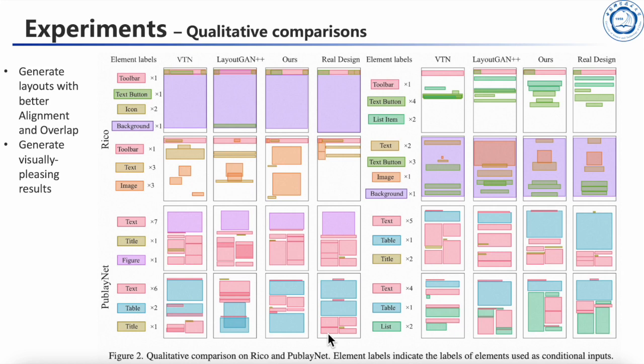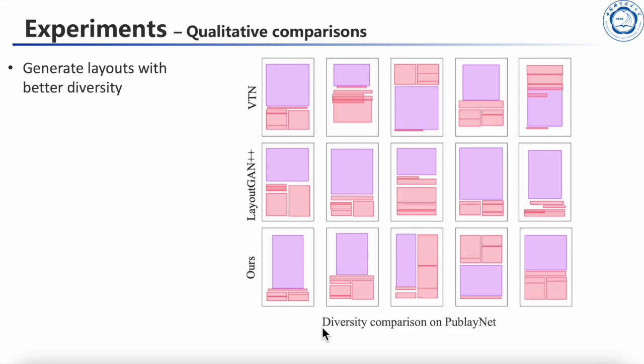Qualitative comparisons. Compared with other conditional layout generation models, our method generates decent layouts with better alignment and overlap, given the same layout attributes as conditional input. Layout DM also performs well in diversity, because it breaks the generation into a series of conditional diffusion steps, which are relatively easy to model. This alleviates the mode collapse problem in strongly conditional generation tasks that can lead to the generation of similar modes.